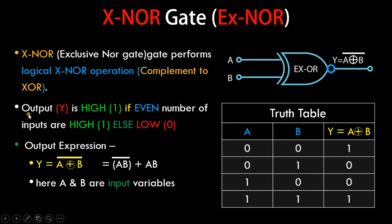Let me read the output case which is written here. Output Y is high, that is Y equals 1, if even number of inputs are high, else it is low. This is exactly opposite to the XOR gate. In XOR gate, the output is high if odd number of inputs are high, otherwise it is low. The output expression is: Y equals A XOR B complement, which can be simplified to AB complement plus AB, where A and B are input variables.